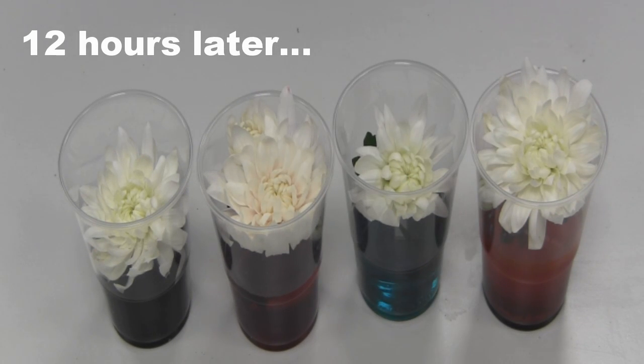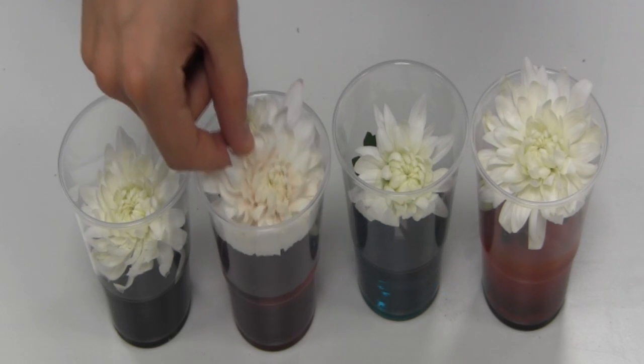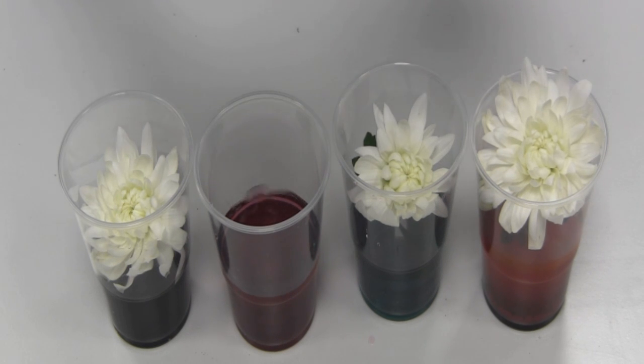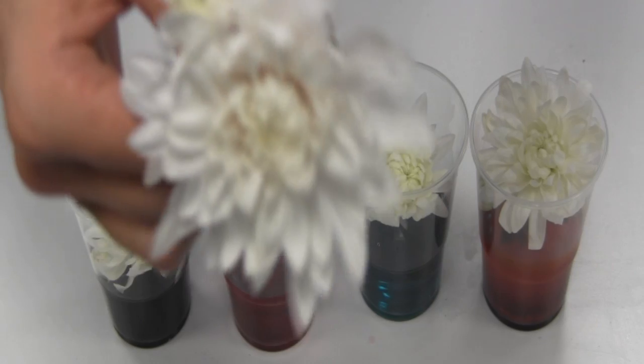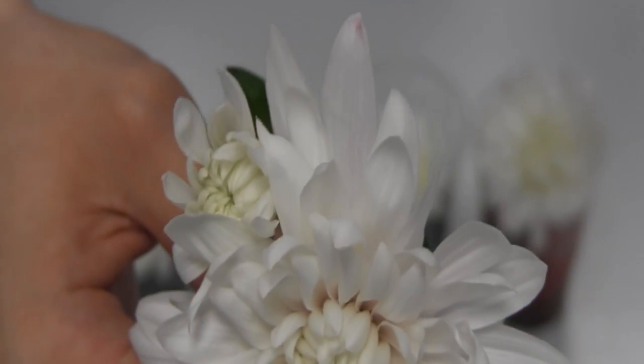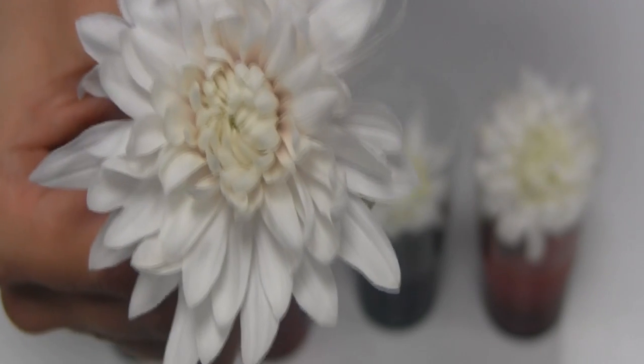So, here you can see the results from our transpiration color changing flower experiment. You can see a clear difference between the color of the pink flower and the green flower. Parts of the flower are visibly pink. There are parts of the flower where the food coloring has been particularly strongly uptaken.